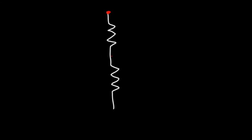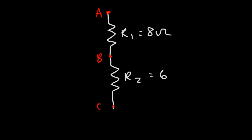Now let's work on a different type of problem. We have two resistors and three points of interest: point A, point B, and point C. R1 has a resistance of 8 ohms and R2 has a resistance of 15 ohms. The potential at point A is 50 volts and the potential at point B is 10 volts. What is the voltage drop across R2 and what is the electric potential at point C?